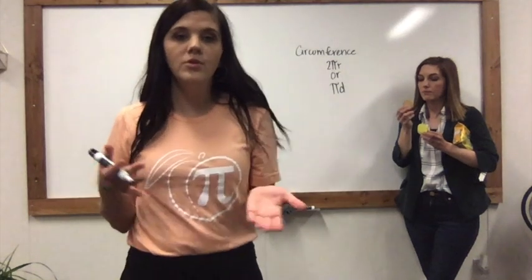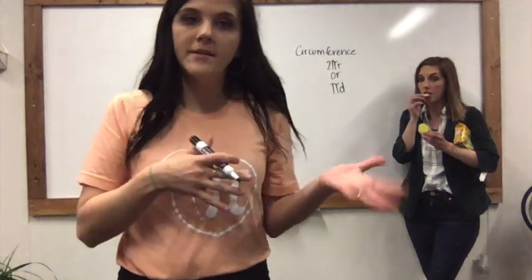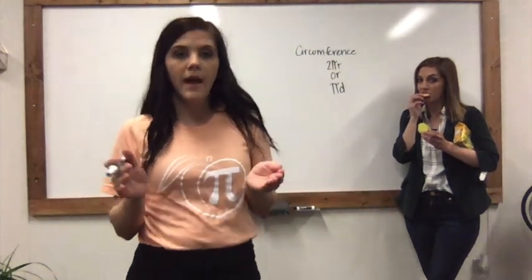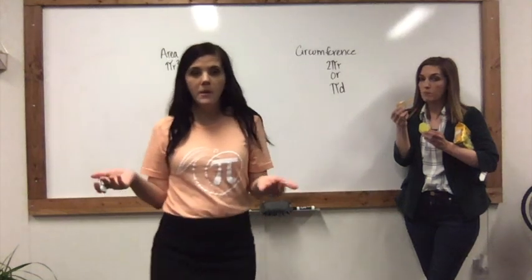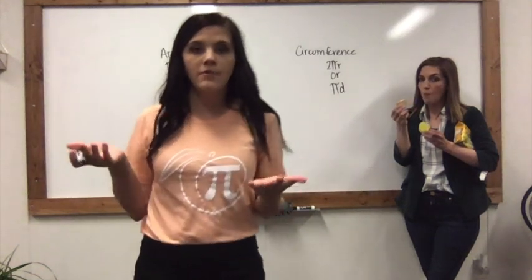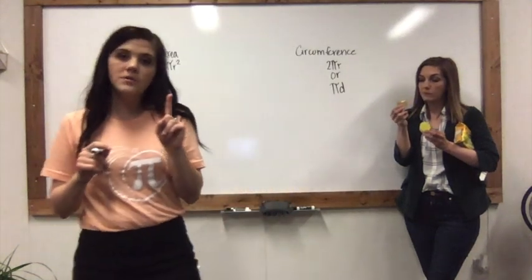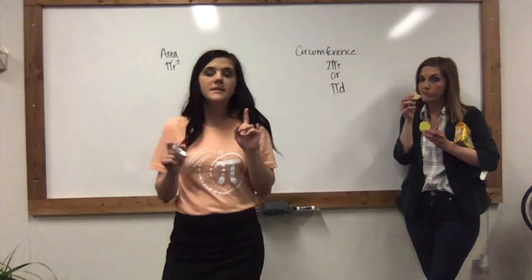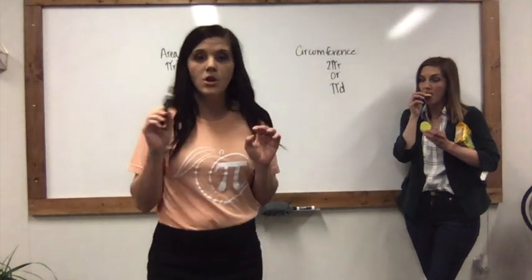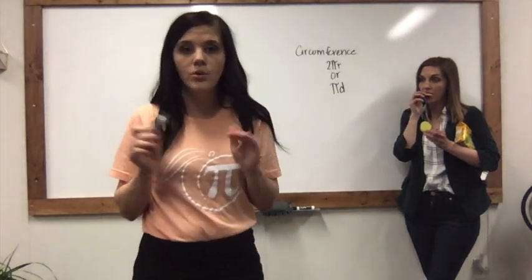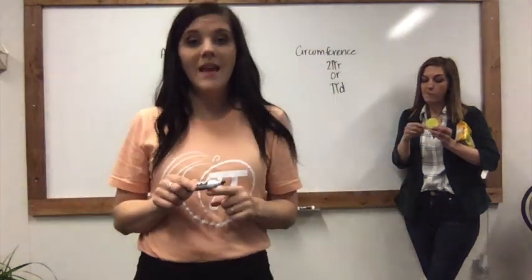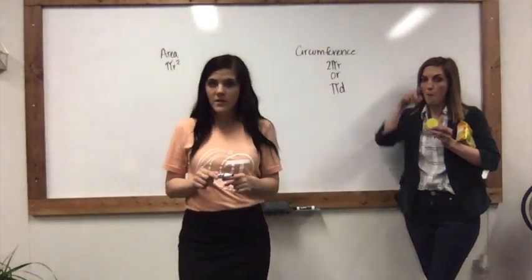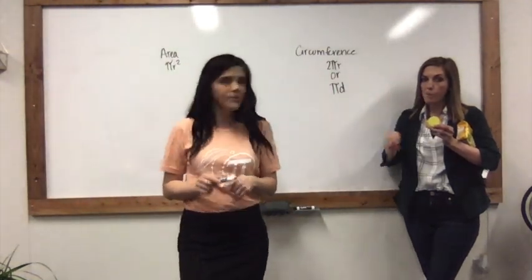Now that we have reviewed how Pi is calculated, let's look at area and circumference of a circle. How can we use Pi? One thing we can use it for is to calculate the distance around the circle. This is not the area on the inside — this is just the outer surface of the circle.